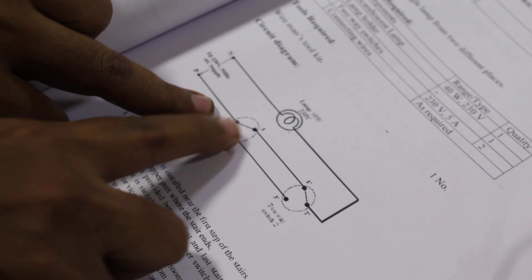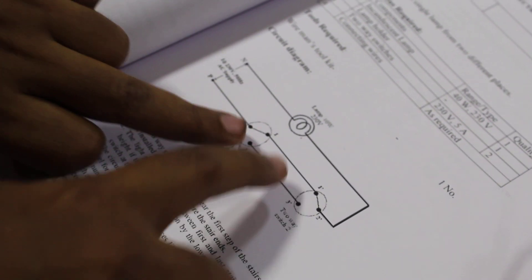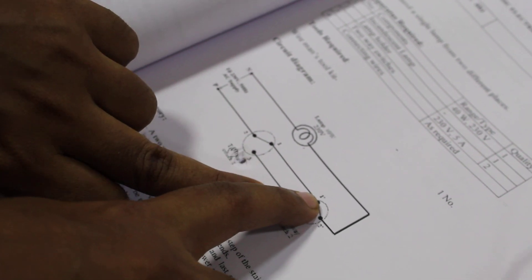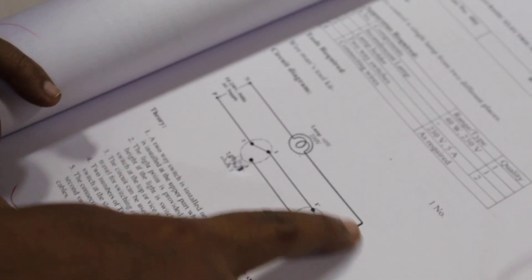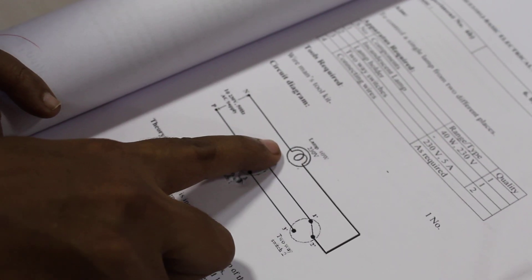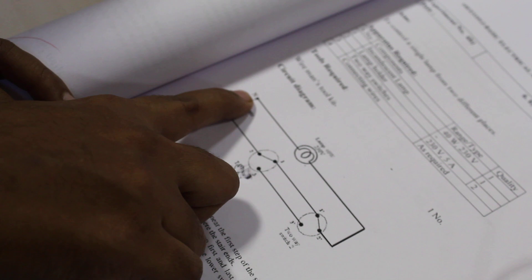Or if I want to turn it off, I can put the switch here. From this point it is connected to the other point for the circuit to be closed, and it is connected to the center point. Then it is given to one end of the bulb. From the other end of the bulb it goes to the neutral.